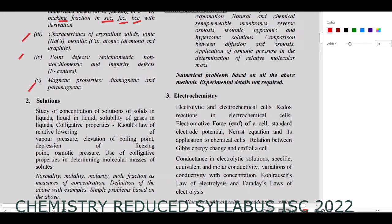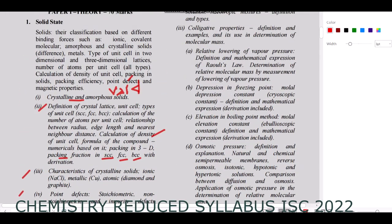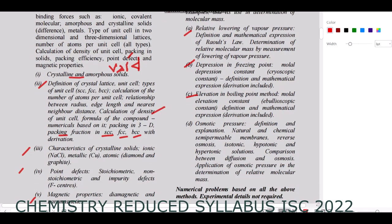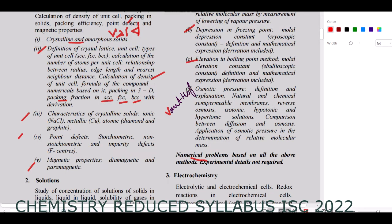For the Solutions chapter, concentration of solution, solid-liquid qualitative properties, normality, molarity, and mole fraction are present. Colligative properties include Raoult's law, Henry's law, lowering of vapor pressure, depression in freezing point, elevation in boiling point, and osmotic pressure. However, the Van't Hoff factor and abnormal molecular mass (dissociation/association) are removed from the reduced syllabus.